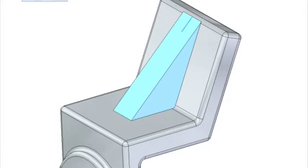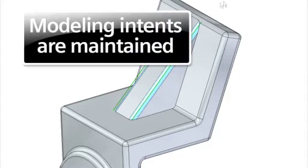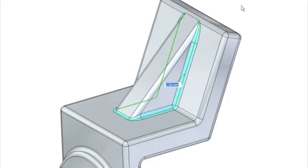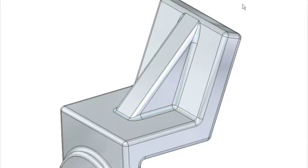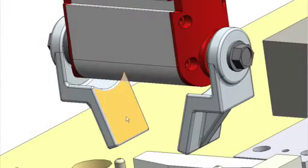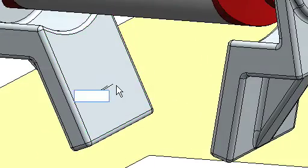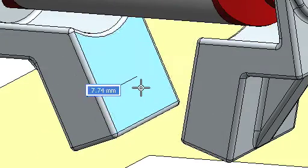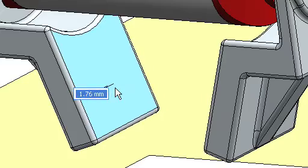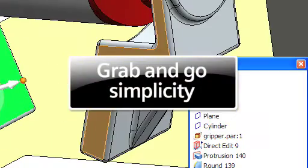As we add a stiffening rib, notice the tangent relationship applied to the blend. This intent is automatically maintained in the 3D model. Next, we place the gripper into the assembly and make final design adjustments in the context of the assembly. With the iterative creation process, a flexible design system is a must. Changing the thickness of the gripper is a simple grab-and-go.